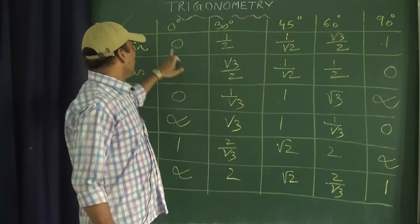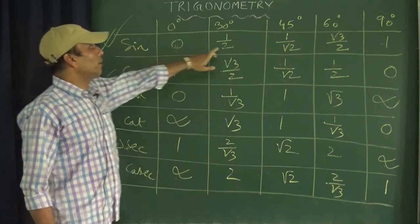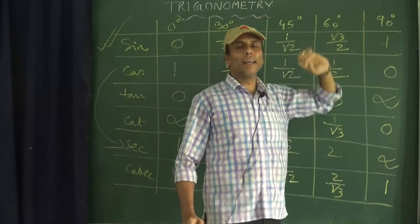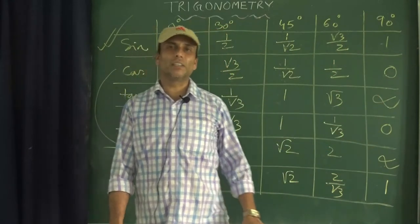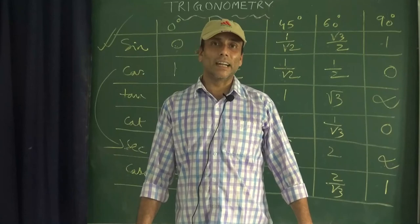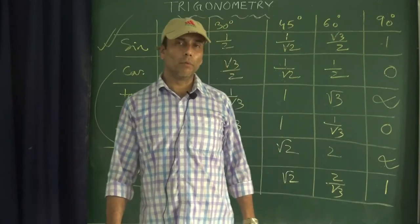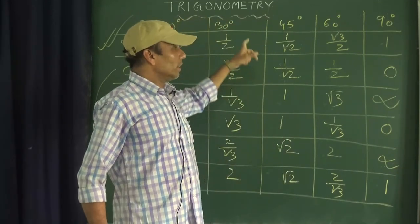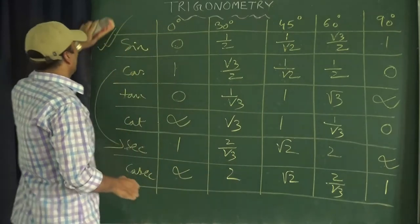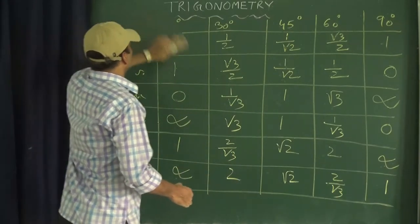So you can see that if we remember only the five values of sine, we can find the remaining trigonometric ratio values very easily within 30 seconds. Now we will solve one problem based on this table.